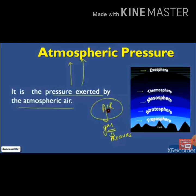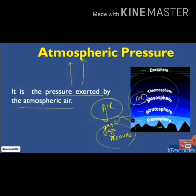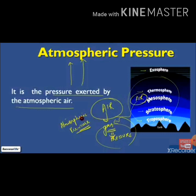Once again: the atmosphere is divided into different layers. In these different layers, one common thing is present — that is air. Air is a gas, and gas has pressure. The pressure exerted by the air is known as the atmospheric pressure. In the atmosphere, air is present; air is a gas; gas has this type of pressure; and the pressure exerted by the air is called atmospheric pressure.